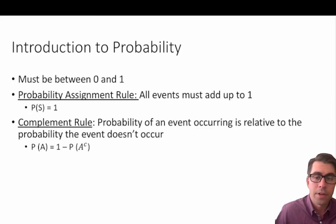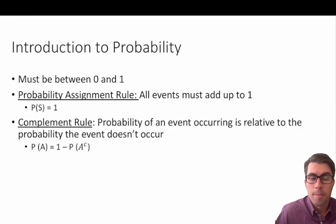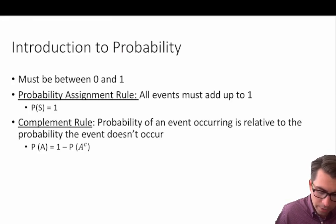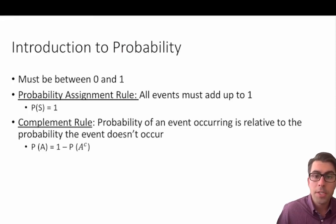There are a number of concepts and rules to think about when learning probability. Let's first talk about two general rules: the probability assignment rule, and the complement rule. For the probability assignment rule, all this says is that all events must add up to 1 — meaning all possible outcomes of a particular scenario must have probabilities that sum to 1.